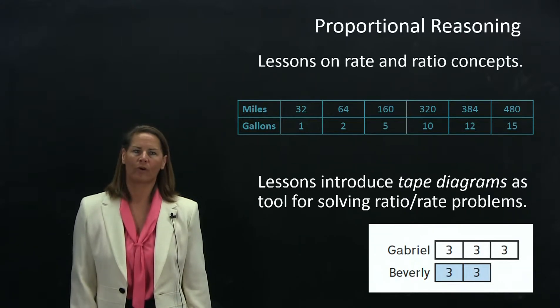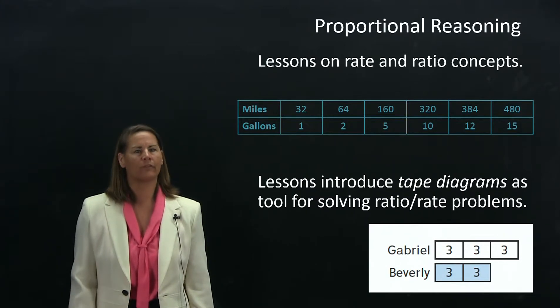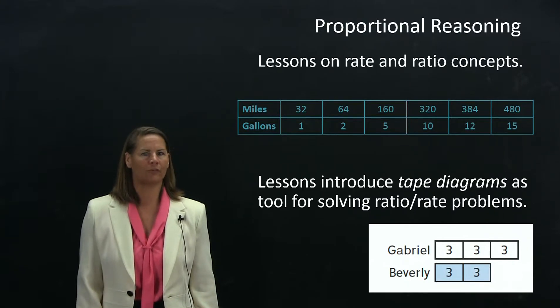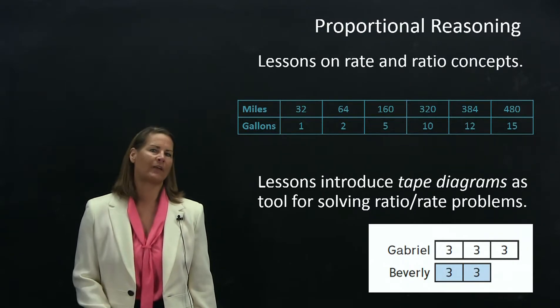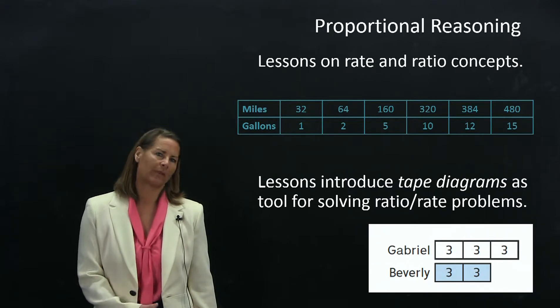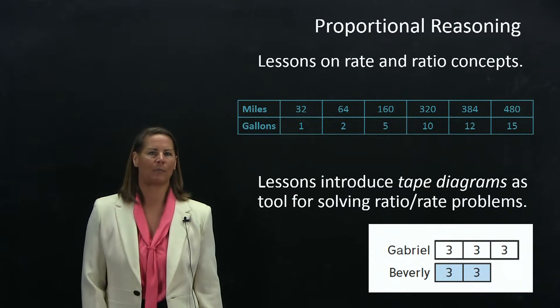For example, Common Core talks about rates and percents as subcategories of ratios. As we've revised the lessons around ratios and proportional relationships, we've paid close attention to the language and made sure that it maps onto the Common Core standards and aligns completely. So when kids see things related to Common Core, the language is going to be seamless from Everyday Math to Common Core.